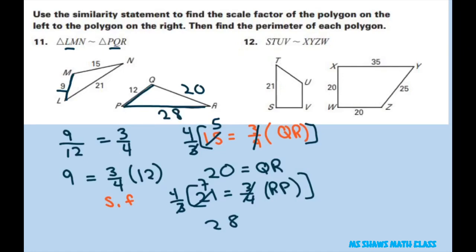So that's the scale factor from the left to the right. Now we have to find the perimeter. So you just add these numbers up. So the perimeter of triangle LMN, if you add all those numbers up is going to be 45.